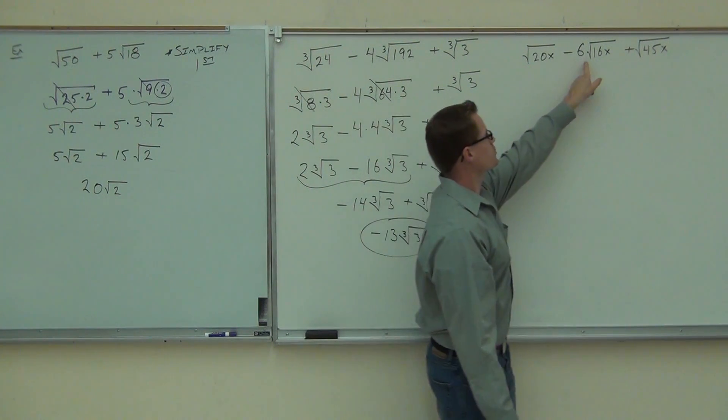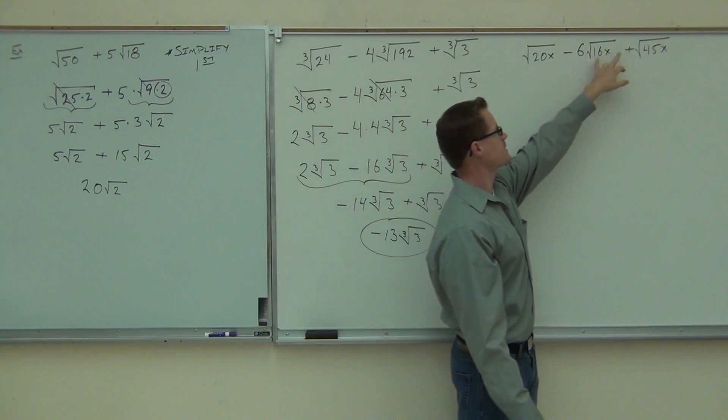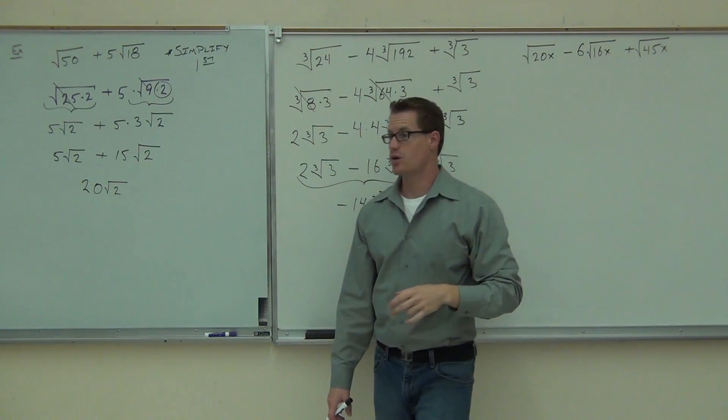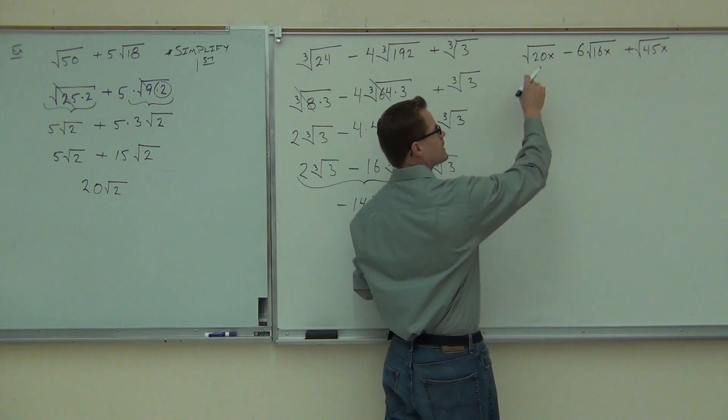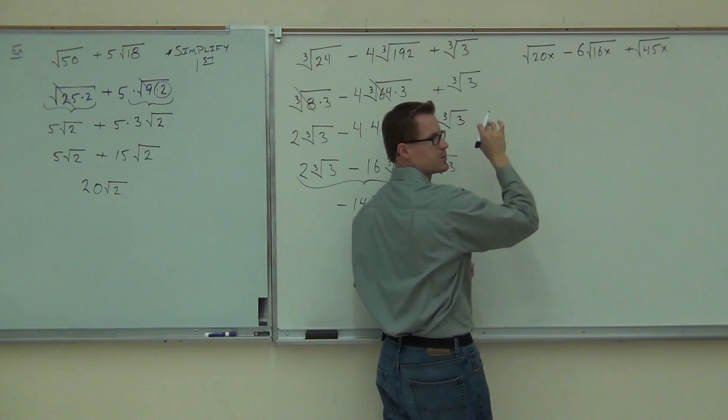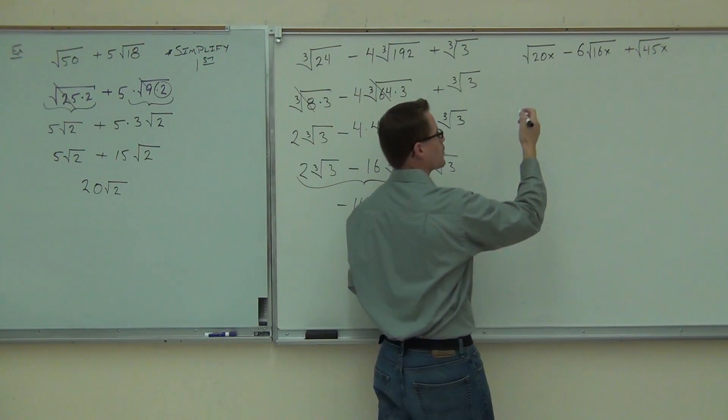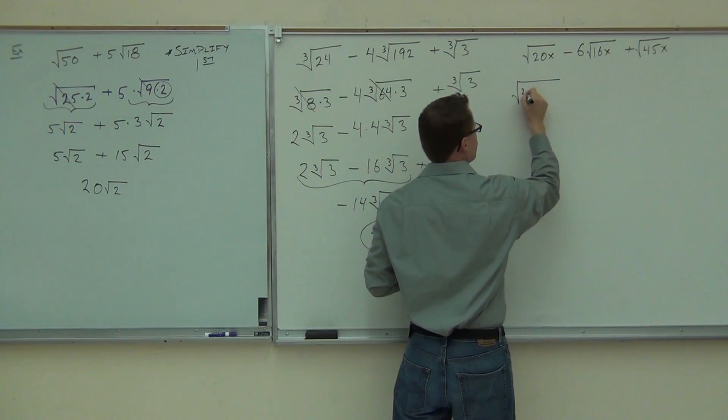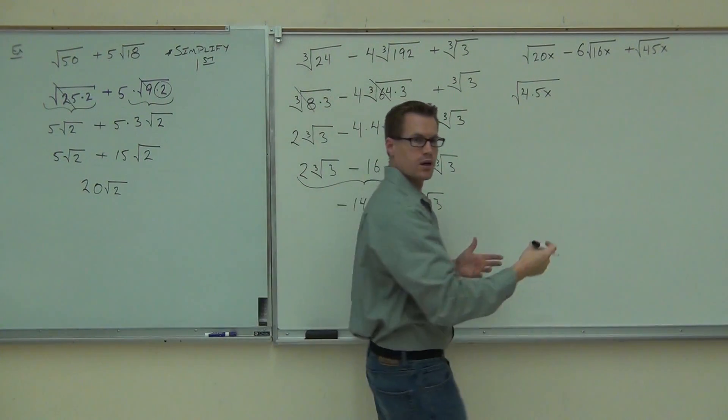But we can still simplify them the same way we would before. So if the power is bigger than the root, we can simplify it. If it's not, then we can't as far as the variable goes. The numbers will do the same exact way. So when we look at this thing, we've got square root, square root, square root. The roots are satisfied. We've got 20x, 16x, 45x. The radicands aren't. We need to simplify those first. So when we look at the 20x, can you tell me what number I'm looking at for 20, please, quickly? 5 and 4. Or 4 and 5. So 4 times 5x. I'm looking for 4 because it's a perfect square now.